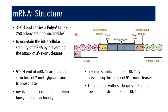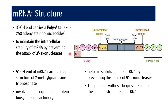In the poly-A tail, almost 20 to 250 adenylate ribonucleotides are usually found. The poly-A tail maintains the intracellular stability of mRNA by preventing the attack of 3' exonucleases. The 7-methylguanosine triphosphate cap is involved in the recognition of the protein biosynthesis machinery — without this 5' cap, the ribosome cannot identify the mRNA for protein biosynthesis. Additionally, this 5' methyl cap protects the mRNA from attack by 5' exonucleases.